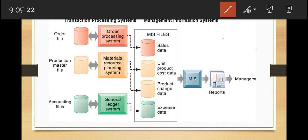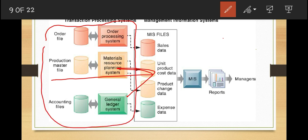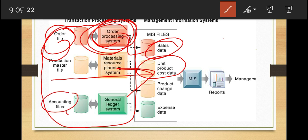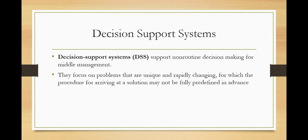Management information systems depend on data from transaction processing systems. Order data, production data, and accounting data — including expenses, payables, and receivables — all enter into the MIS, which processes them to produce information in the form of reports. These reports are then sent to managers who use them to make decisions.